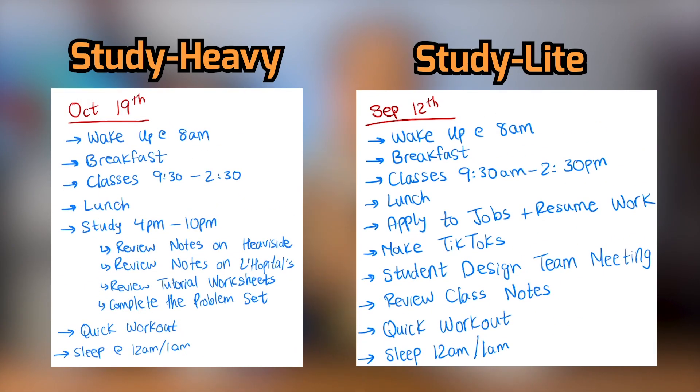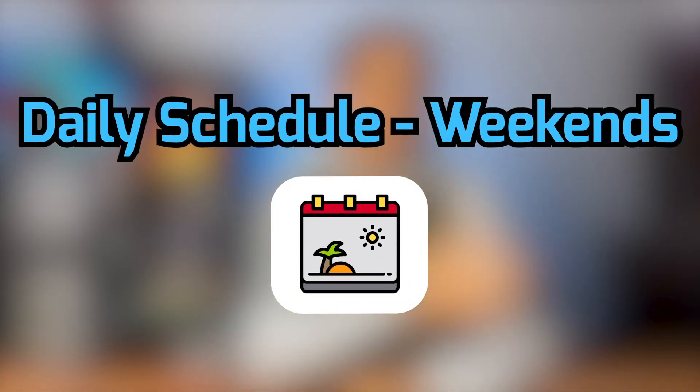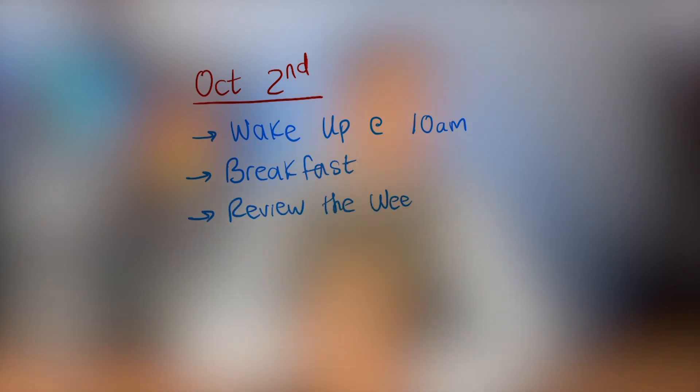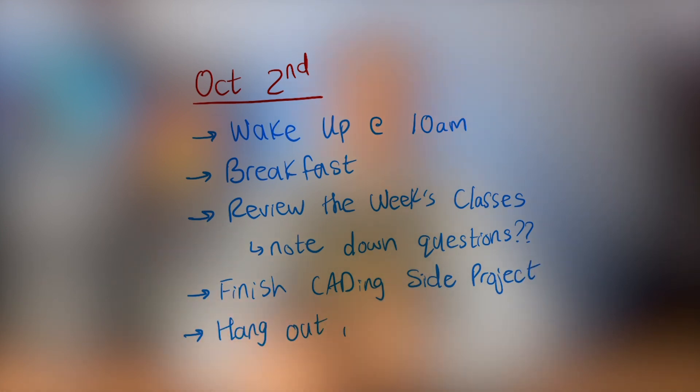Comparing my study heavy days with my study light days, you'll see that engineering isn't about putting in 200% effort every single day — if you did that, you'd burn out and hate it. Some days will be easy and chill, while others will be tough and intense. My weekend schedule looks pretty similar to my weekday schedule, except there are no classes. Usually I start around 10am, have breakfast, then spend a couple hours reviewing what I learned the past week and noting things that confuse me to ask professors or peers. The weekend is also where I make time for things I miss during the week, like social events or side gig work.